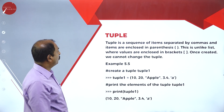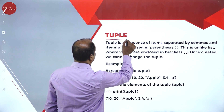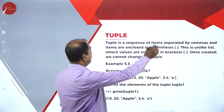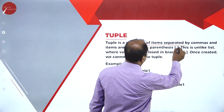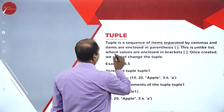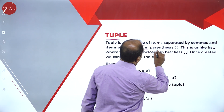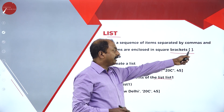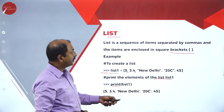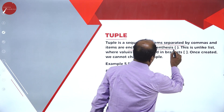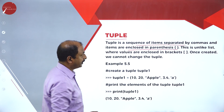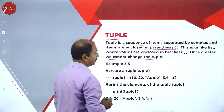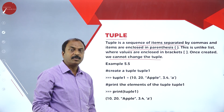Now let us move on to one more data type called tuple. Tuple is another data type of Python. What is the definition? It is a sequence of items separated by commas and items are enclosed in parentheses. In the previous example, all items were enclosed in square brackets, but in tuple we enclose them in a pair of parentheses. Once created, we cannot change the tuple — when the values have been entered, they cannot be altered. That is, tuple is immutable.